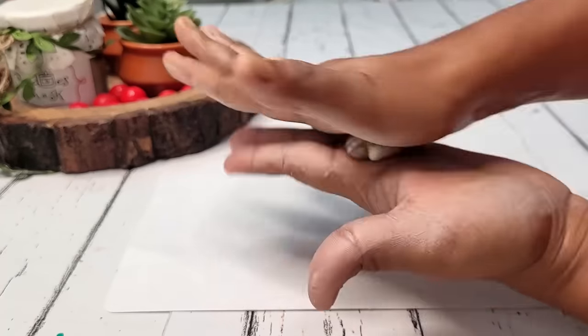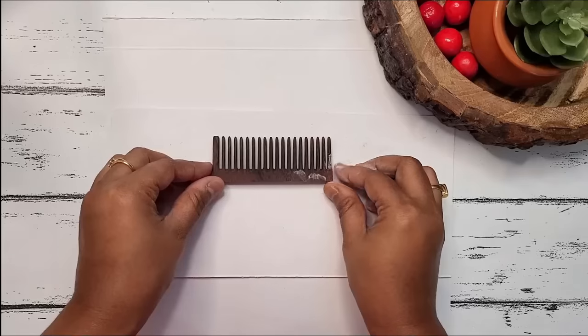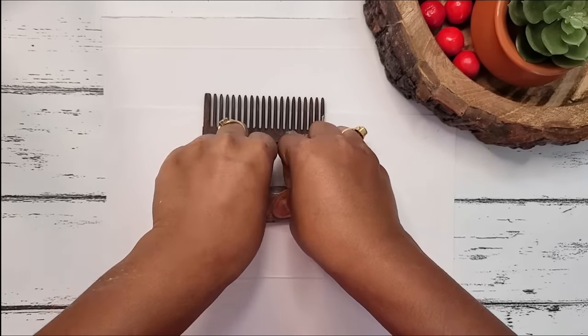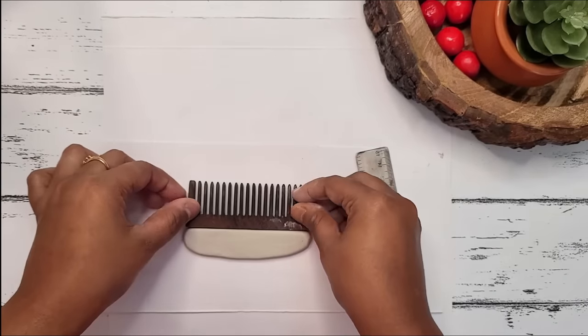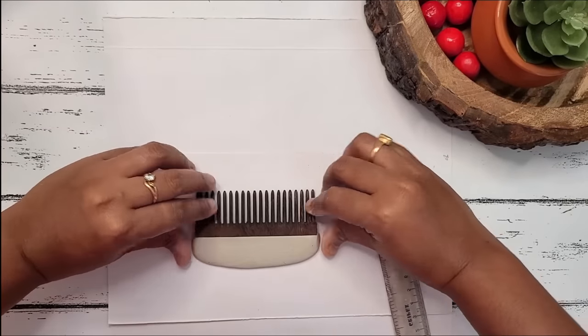I'm mixing equal portions of resin base and hardener together. Now I'm giving a cylindrical shape to the clay and then pressing the clay using a scale like this, reshaping it and attaching it to the top part of the comb.